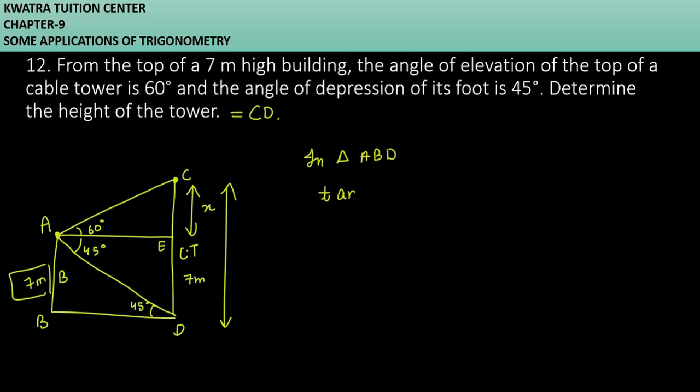For this whole height, you will find using tan 45: perpendicular is 7, base is BD. So BD value, how much will you get? 7 meters. So its opposite, which is AE, will also be 7 meters.